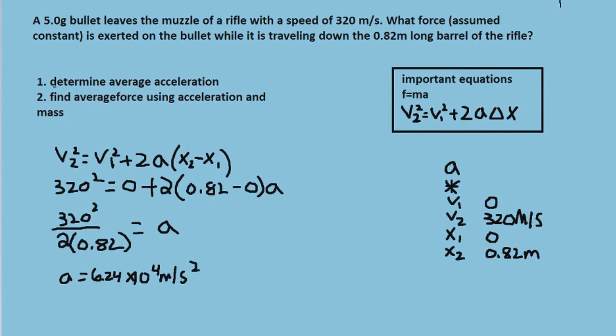Now that's it for part one. Now we want to find the average force using acceleration and mass. And the equation that ties force and acceleration and mass together is f equals ma.